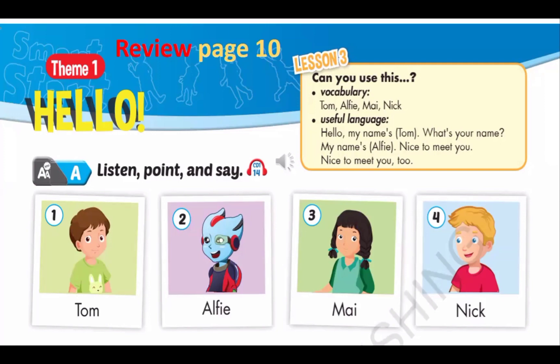Number two: Alfie. Give me an A — A. Give me an L — L. Give me an F — F. Give me an I — I. Give me an E — E. What does it spell? Alfie. Awesome sauce.